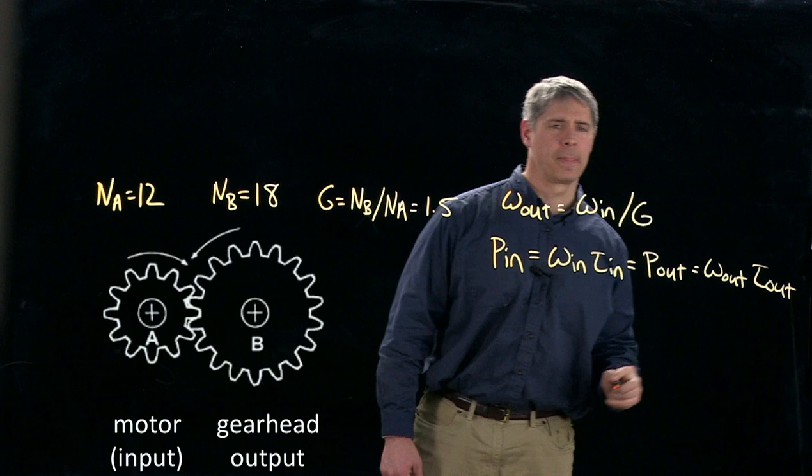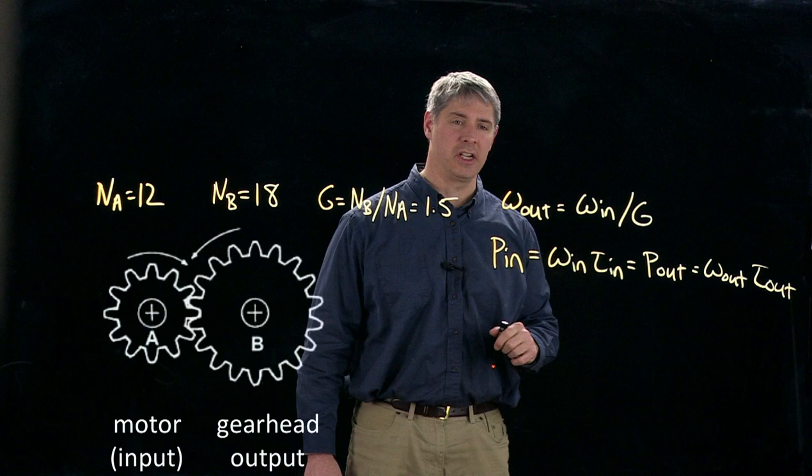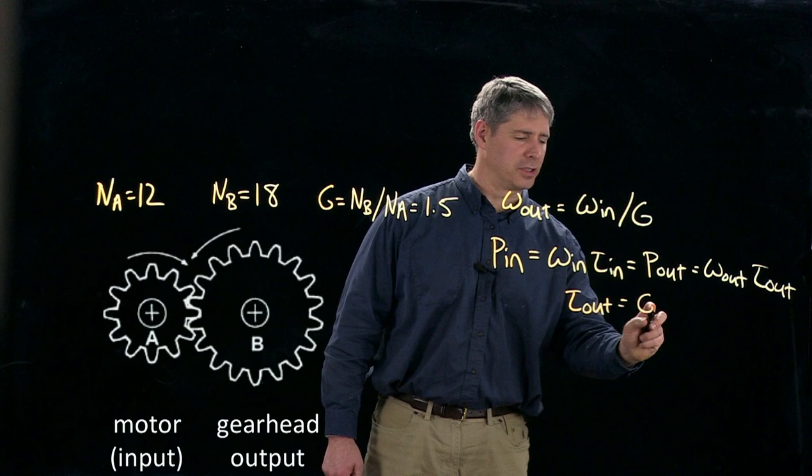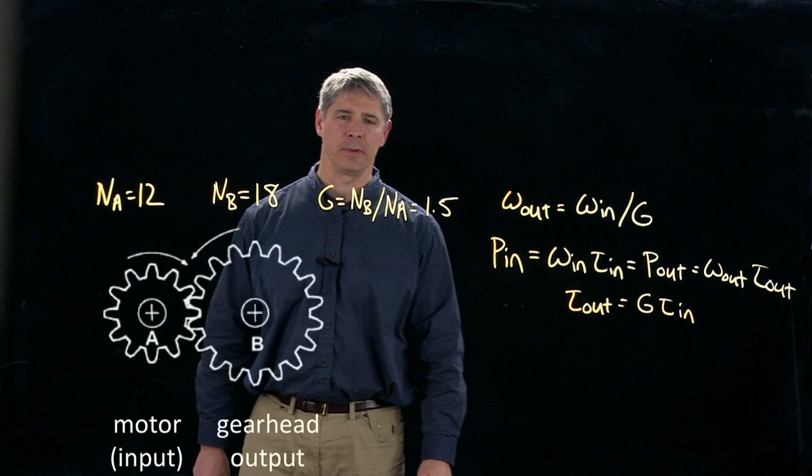And because we have this relationship that omega out is equal to omega in divided by G, then we know that the output torque must be equal to G times the input torque. So this gearing here accomplishes both slowing down the motor as well as increasing the amount of torque available.